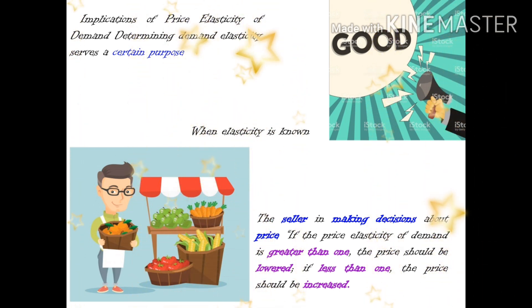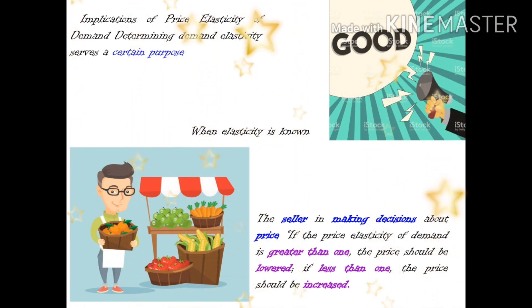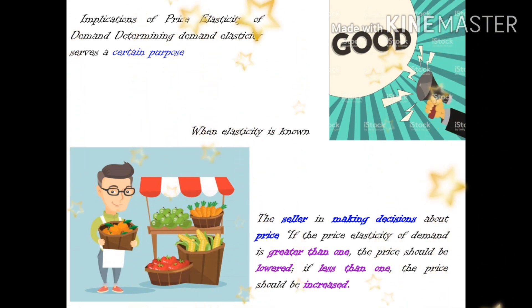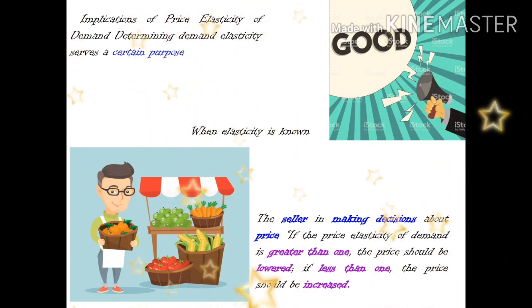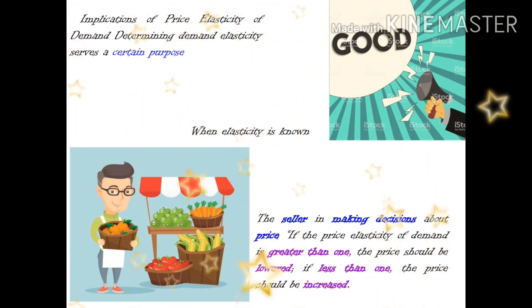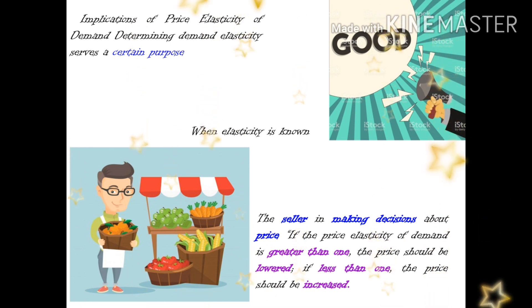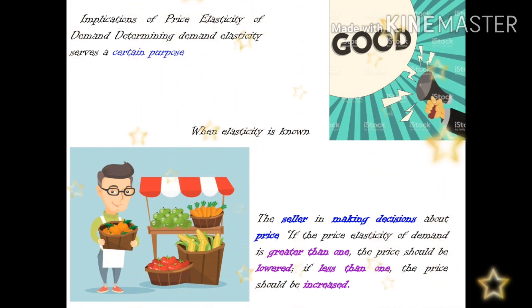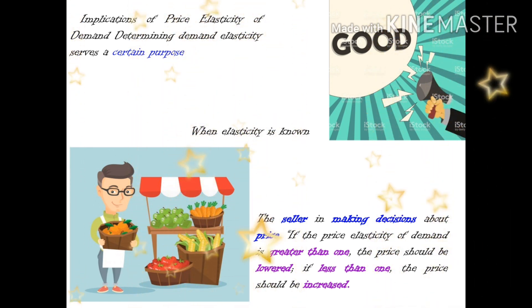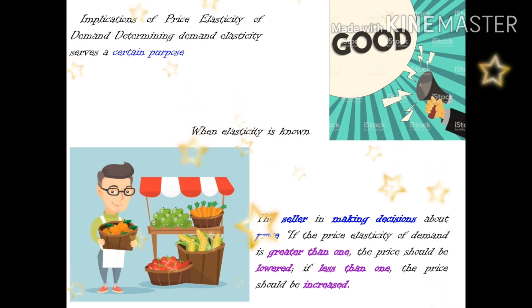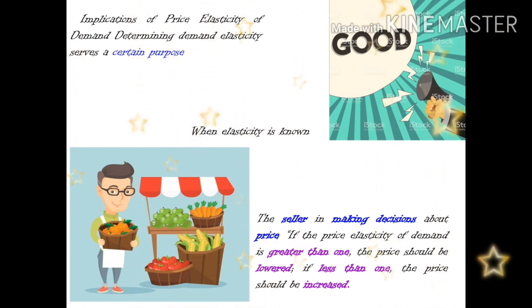The elasticity of demand is used to determine demand elasticity for a certain purpose — either it is good or bad. When elasticity is known, the seller can make decisions about price. If the price elasticity of demand is greater than 1, the price should be lower. If the price elasticity is less than 1, the price should be increased.